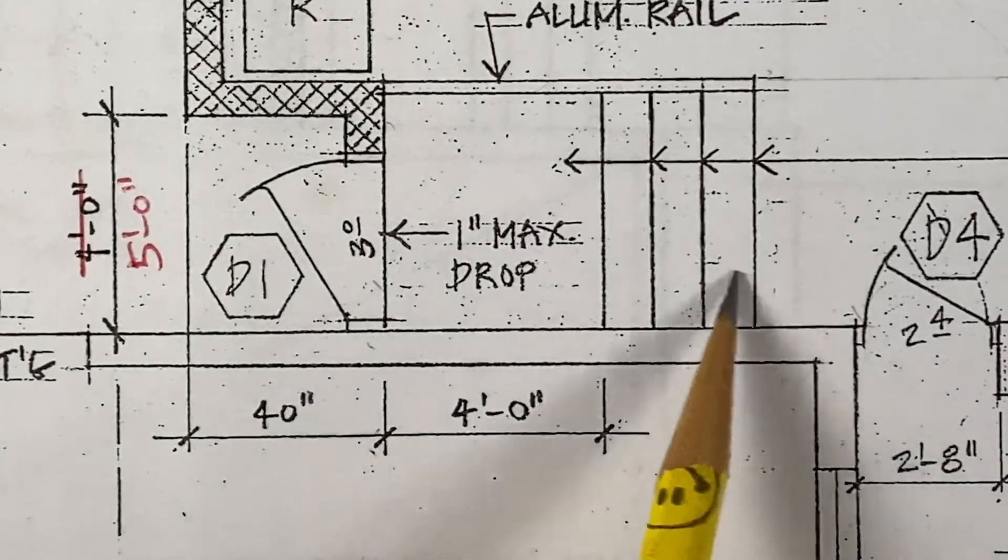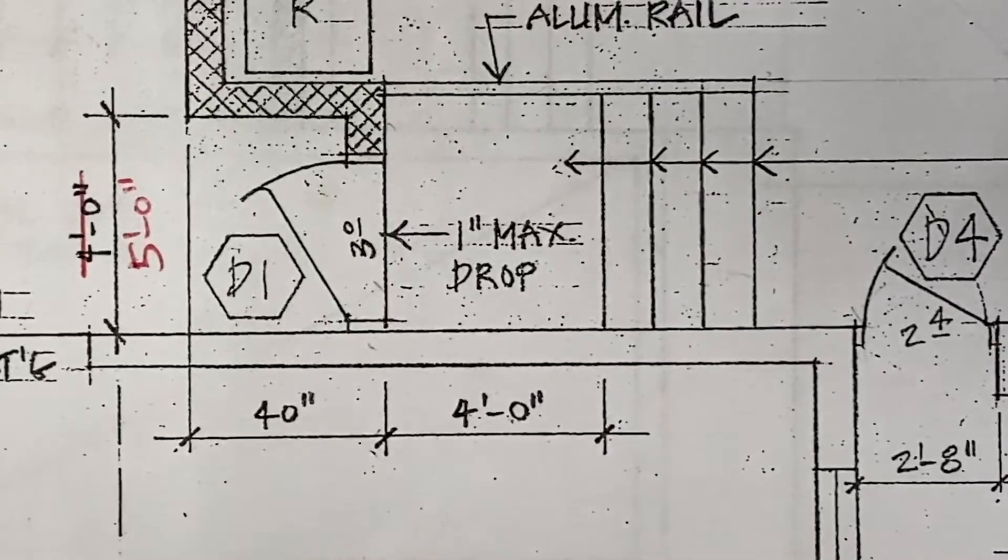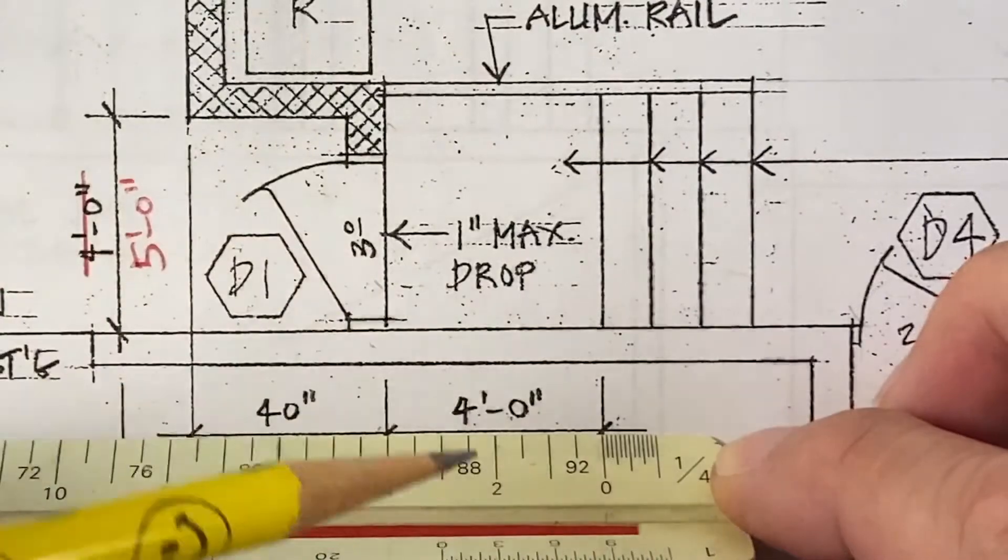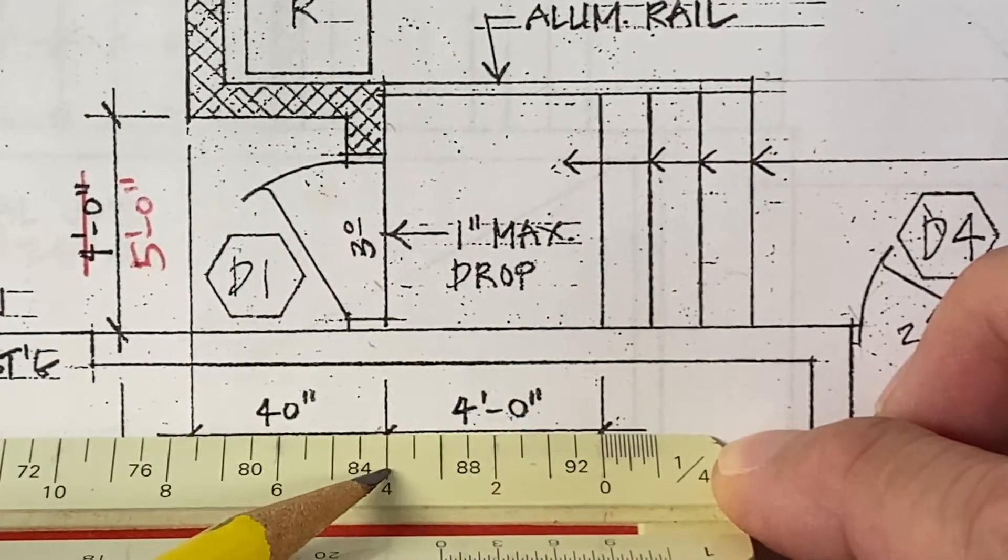And here's a stairway leading through a door where the landing is four feet zero inches. So we line up our scale. Zero, one, two, three, four.